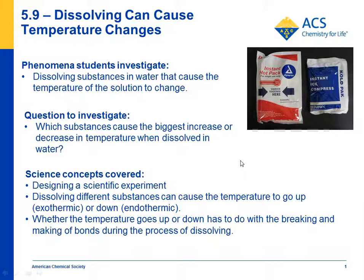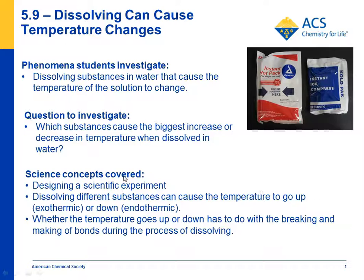Students then do an investigation to see if they can come up with a good experiment to determine which substance causes the largest increase or decrease in temperature out of four substances. The big ideas covered are designing a scientific experiment, that dissolving different substances in water can cause the temperature to go up or down, and that whether the temperature increases or decreases has to do with the making and breaking of bonds between water molecules and the substance being dissolved.